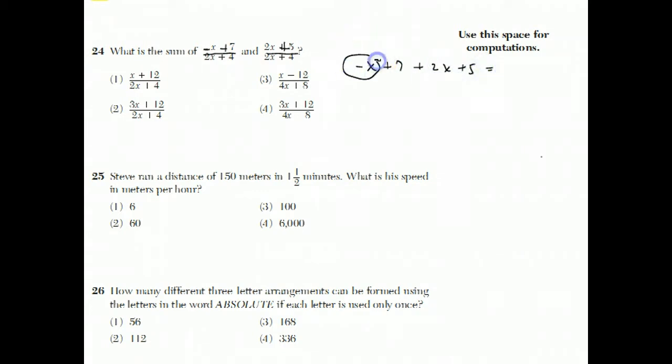The minus x and the plus 2x, those combine to become 1x. And the plus 7 and the plus 5 combine to be plus 12. And the denominator is just 2x plus 4. So, x plus 12 over 2x plus 4, which is choice number 1.